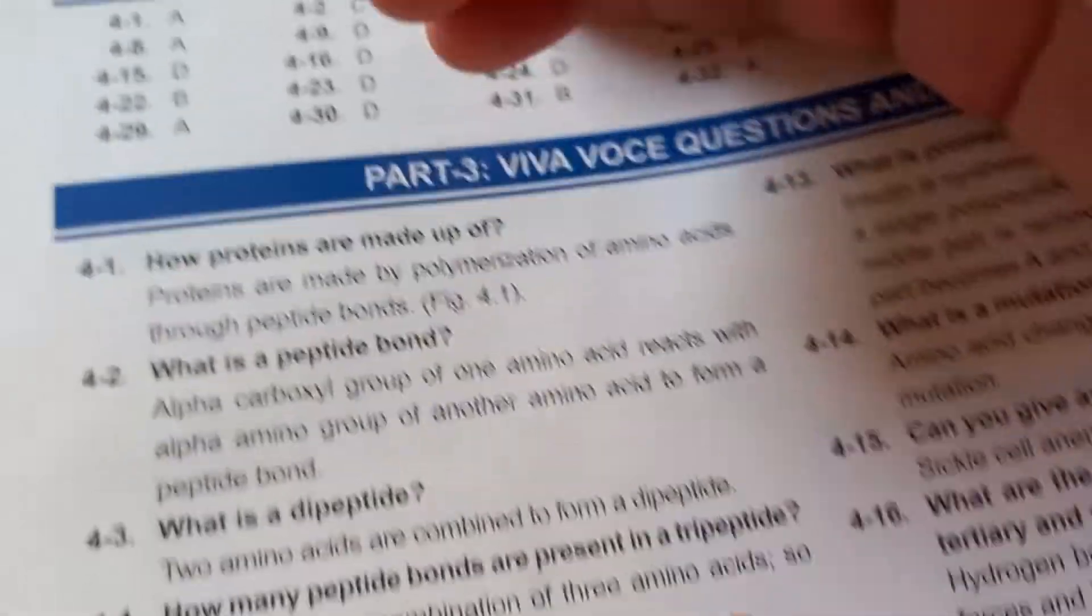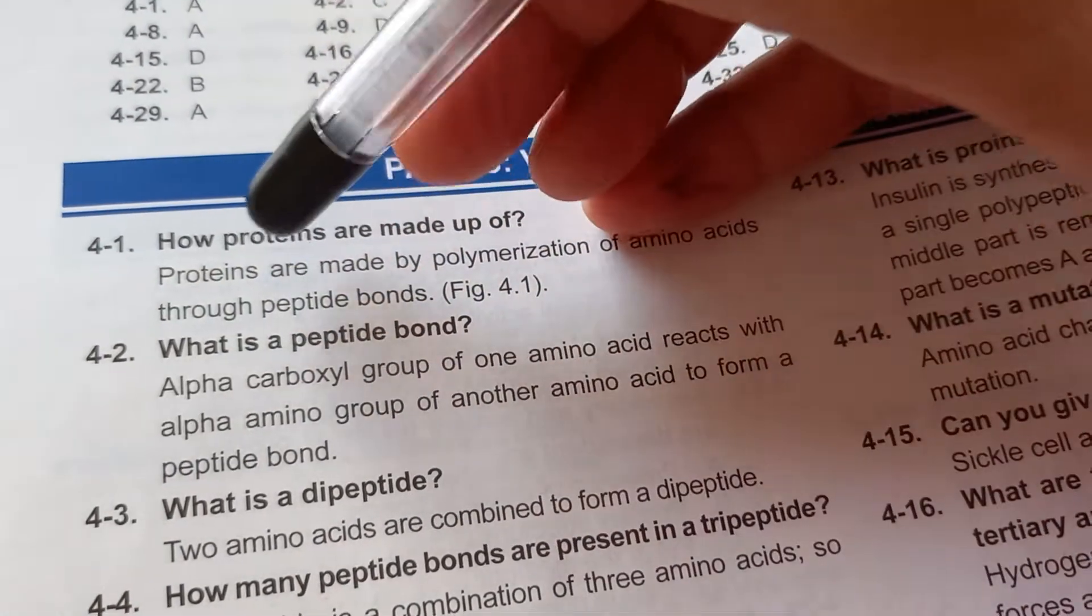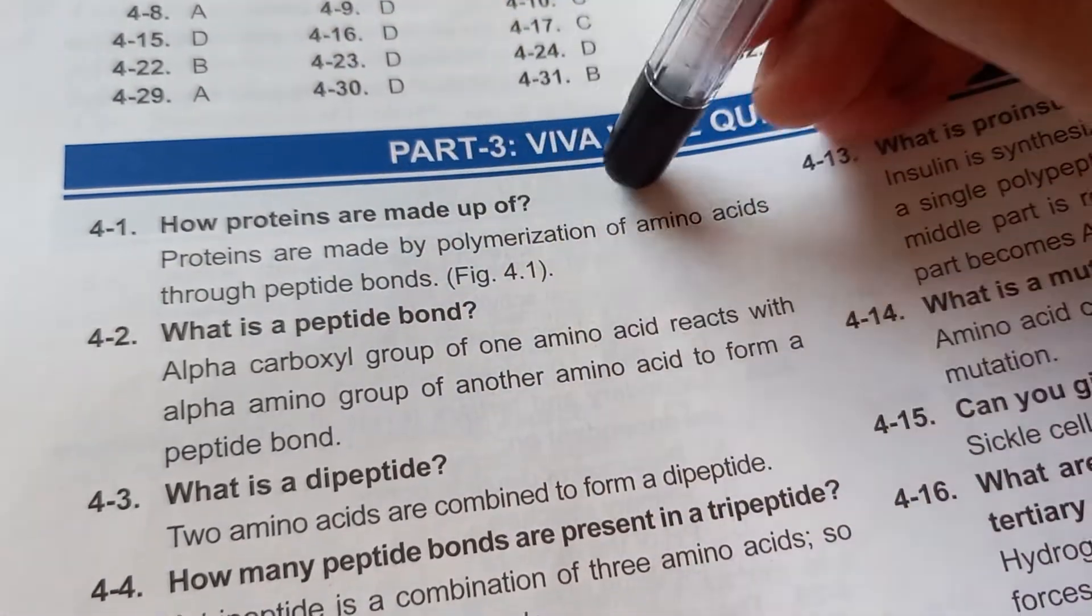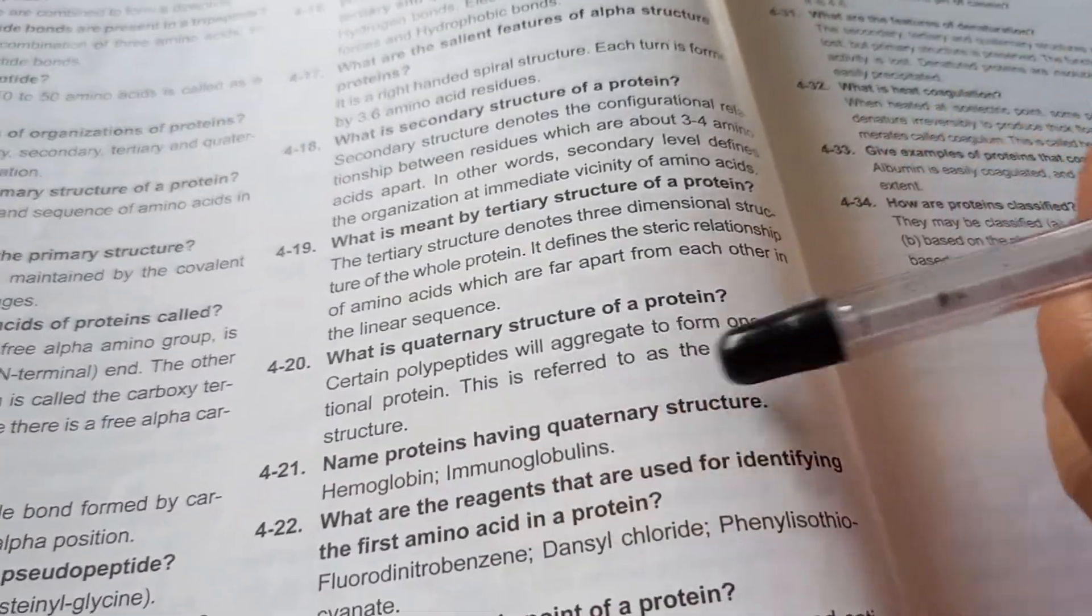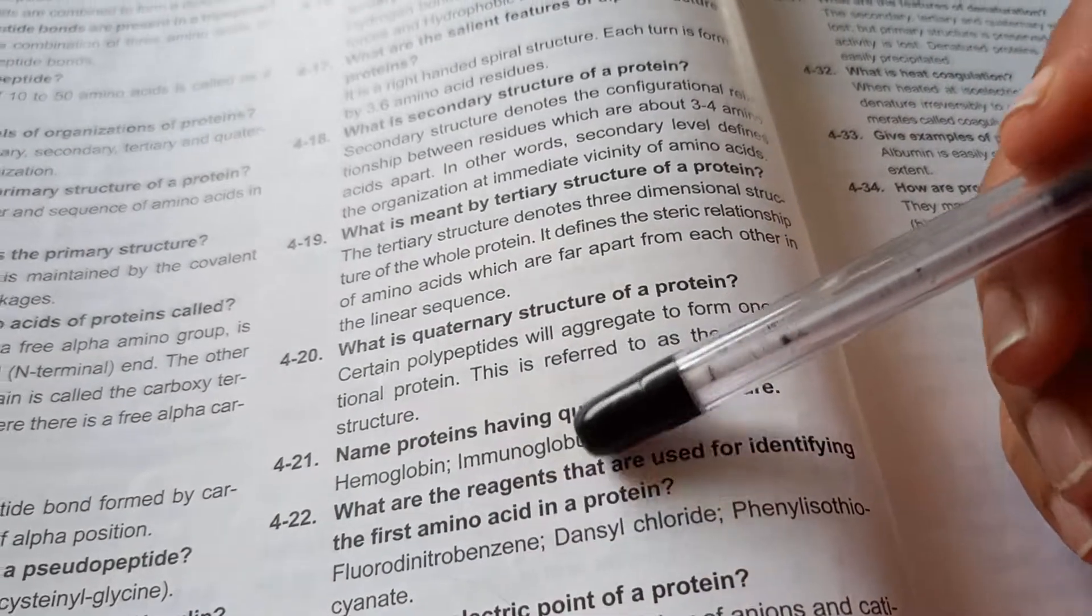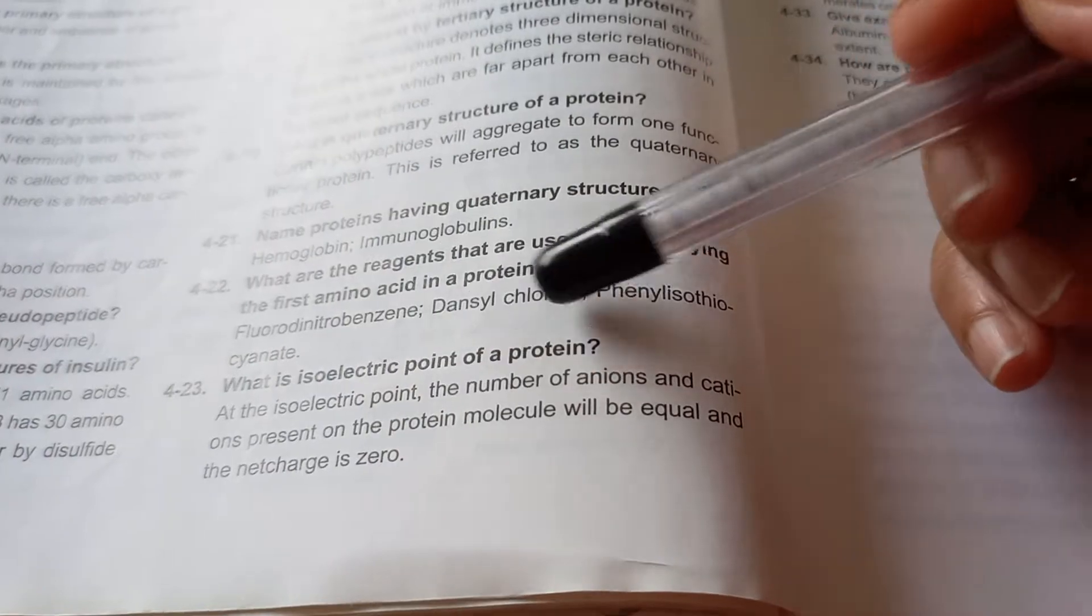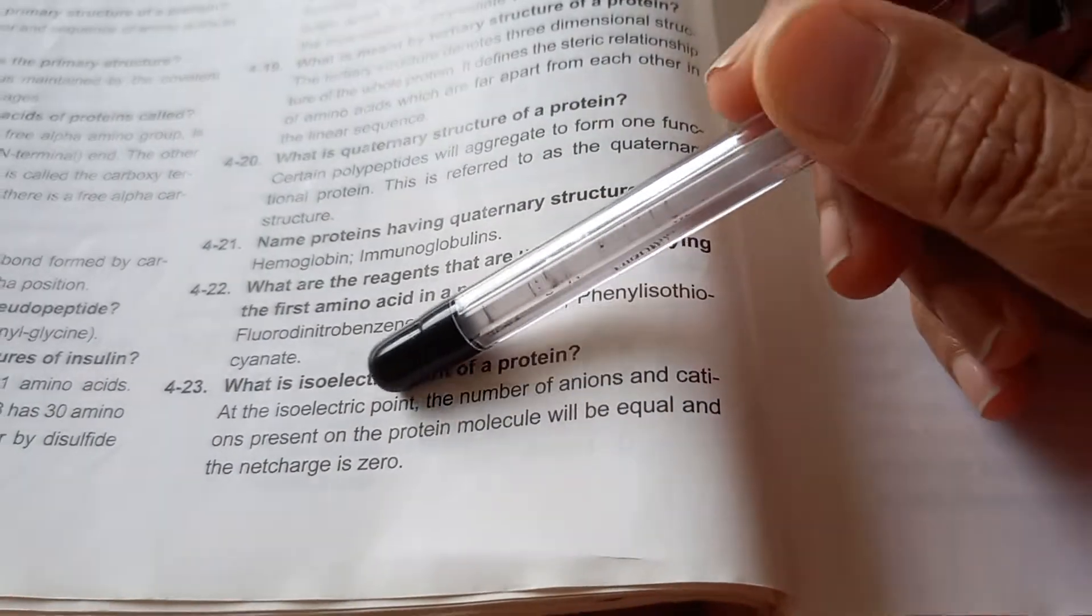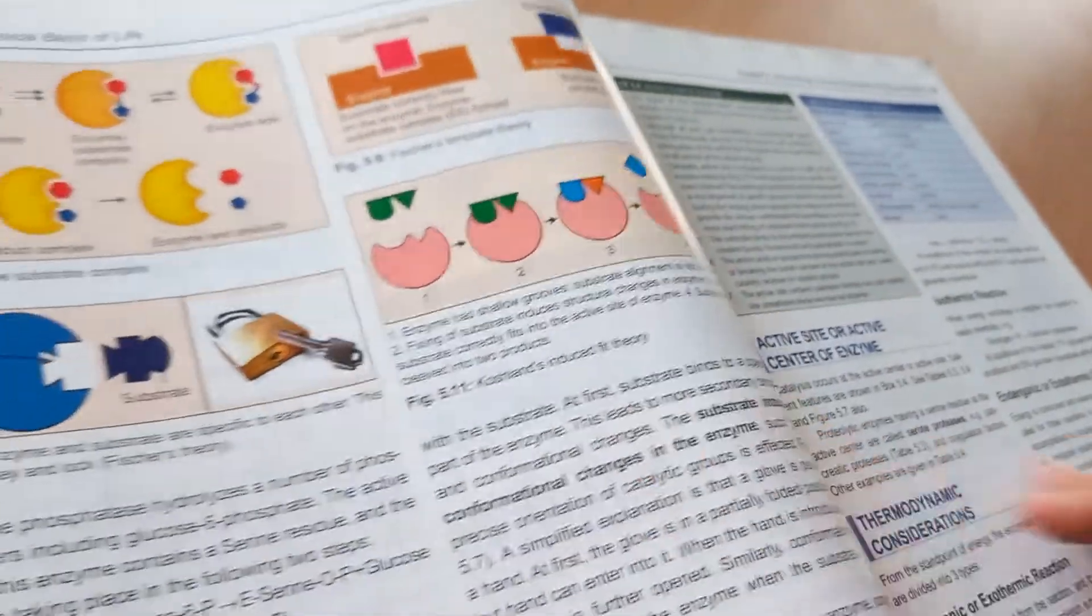This has answers, wow, this is excellent. How are proteins made up? Answer: Proteins are made up by polymerization of amino acids through peptide bonds. Name proteins having quaternary structure: Hemoglobin, immunoglobulins have quaternary structure. What is isoelectric point of a protein? At the isoelectric point, the number of anions and cations present in the protein molecule will be equal and the net charge is zero. I really like that type of question and answers.